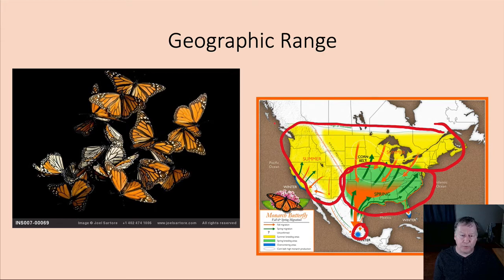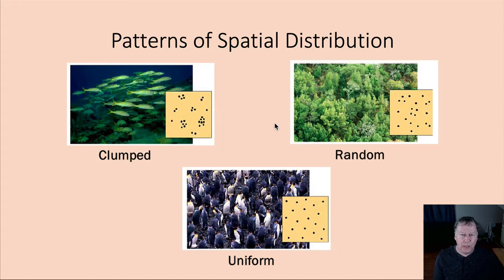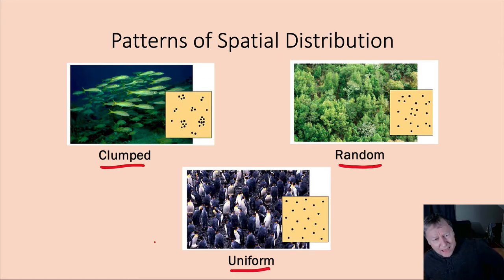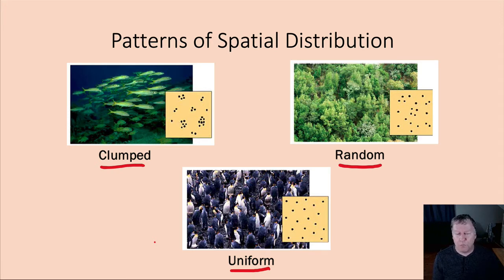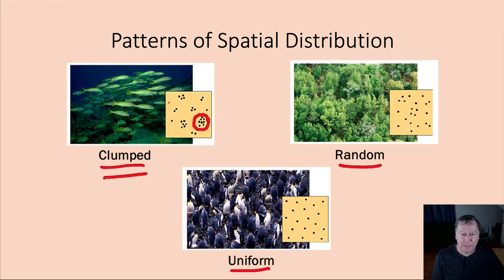Because populations are made of groups, we also look at how individuals are spatially distributed within an area. There are three basic spatial distribution patterns: clumped, random, and uniform. Imagine swimming in the ocean and seeing empty water except for a school of fish on your left and another school about 100 yards to the right. This is clumped distribution — fair numbers of individuals in some areas and nothing in others. They're clumped because they're distributed around key important resources.